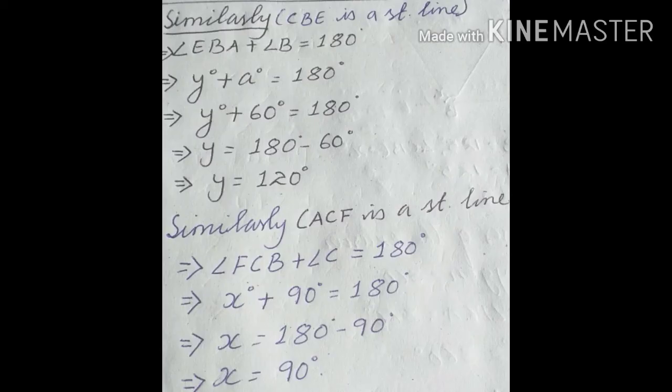Now we have to find x. Take line ACF, which is also a straight line. Adding the two angles gives 180 degrees: angle FCB plus angle C equals 180 degrees. FCB is x and angle C is 90 degrees, so x plus 90 equals 180. Transferring, x equals 180 minus 90, therefore x equals 90 degrees.